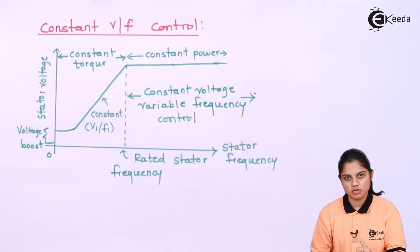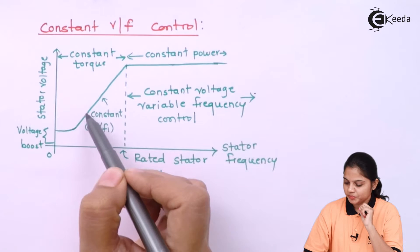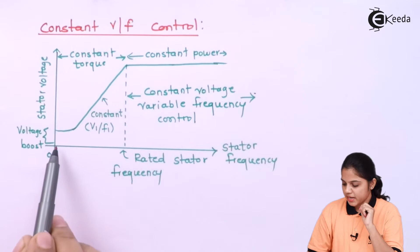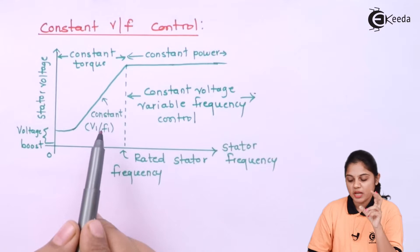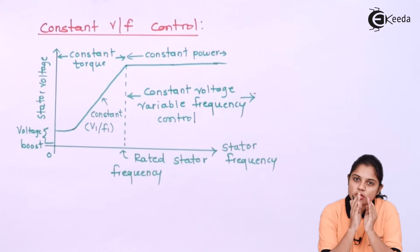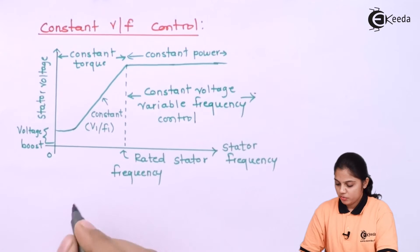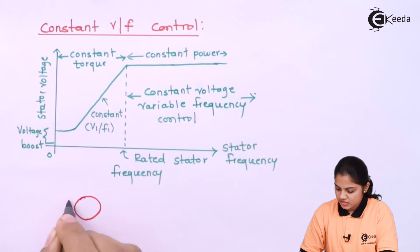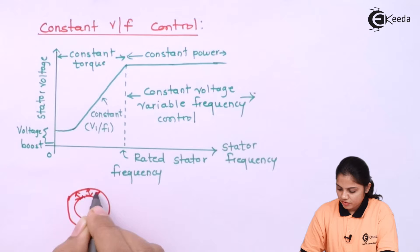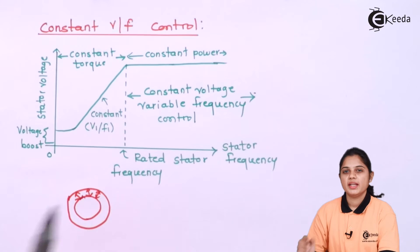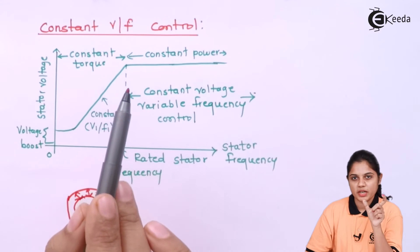You are changing the voltage and changing the frequency, but maintaining their ratio as constant. For that constant ratio, there is an increase in stator voltage and stator frequency. Because the ratio is constant, the air gap flux between the stator and rotor will remain constant, and therefore your torque will also remain constant for that particular period.